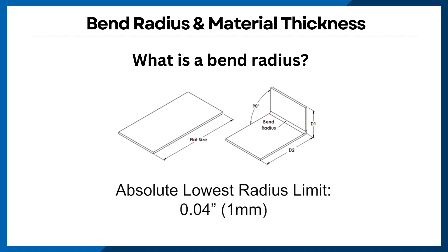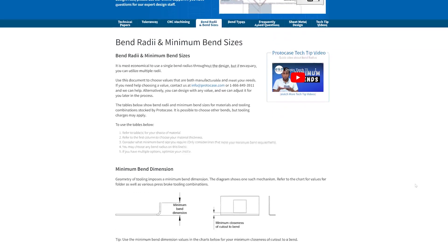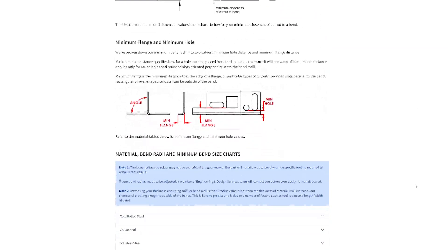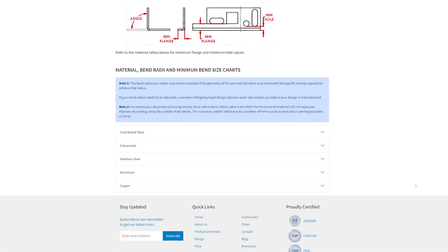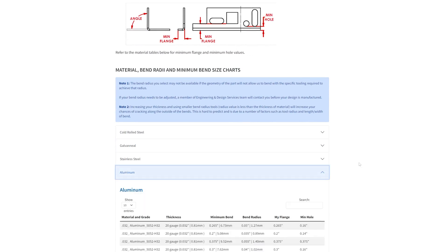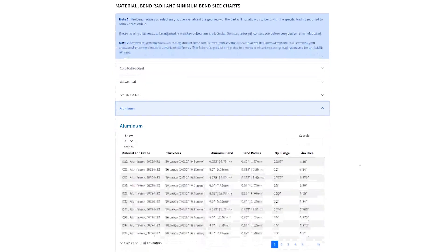In the end, the absolute lower radius limit is determined by our tooling, which can form a minimum bend radius of about 0.04 inches or 1mm. We have comprehensive charts that go through the bend radii and minimum bend sizes for different materials and thicknesses.